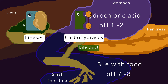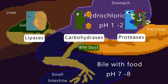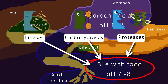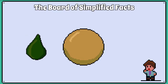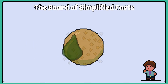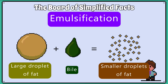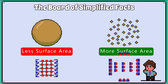Lipases, carbohydrates and certain proteases have an optimum pH of 7 to 8, so the bile generates the favourable conditions in the small intestine. Bile also emulsifies fat. Emulsification describes how the bile emulsifies large droplets of fat into small droplets of fat, which increases the available surface area for lipase enzymic action.